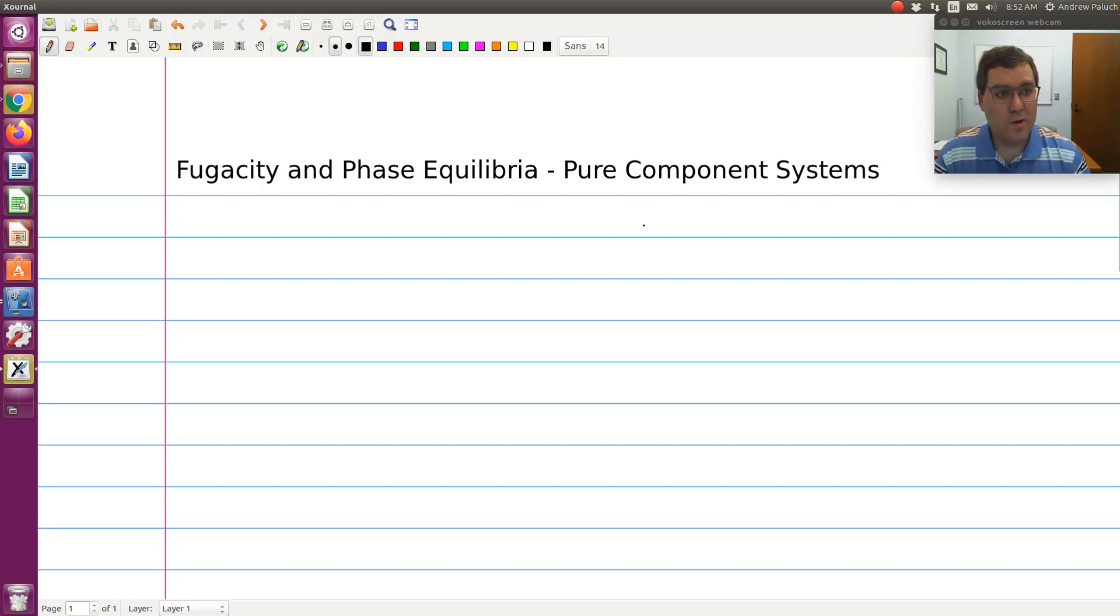What I want to do in this screencast is show how we can take our criteria of chemical equilibria, our equality of molar Gibbs free energy of the two phases, and replace it with an equality of fugacities, and for the case of pure component systems, the equality of fugacity coefficients of the two phases.